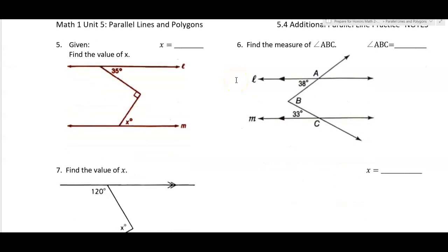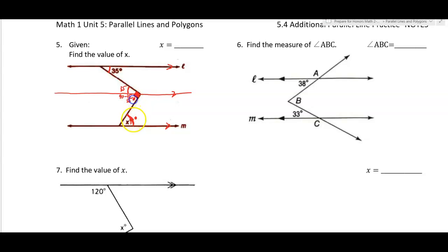Example five — these are good ACT problems. There's no direct correlation between 35 and x, so what you want to do is draw a third line parallel to l and m. Now all three lines are parallel. Since this angle is 35 degrees, this angle is also 35 degrees — alternate interior angles. The box tells us that's 90 degrees, so 90 minus 35 gives 55 degrees. That angle and x are congruent alternate interior angles, so x is 55 degrees.